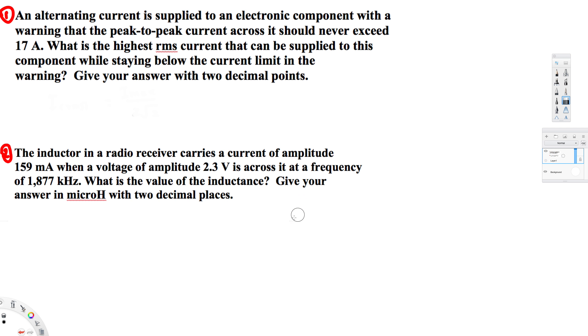What's going on guys, let's look at this problem right here. This question is asking: an alternating current is supplied to an electronic component with a warning that the peak-to-peak current across it should never exceed 17 ampere. What is the highest RMS current that can be supplied to this component while staying below the current limit in the warning?